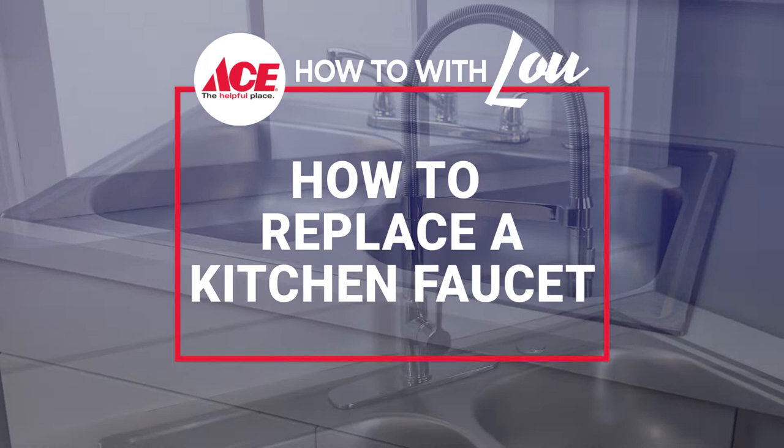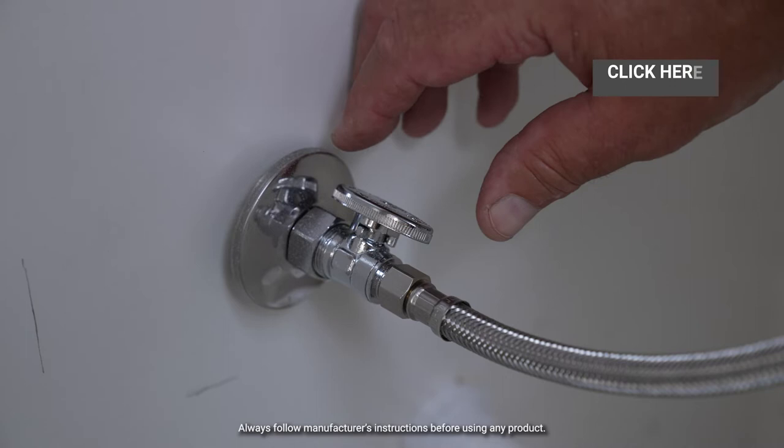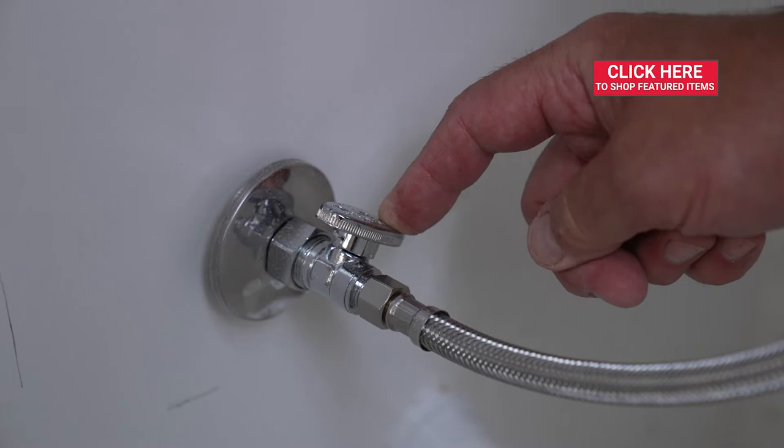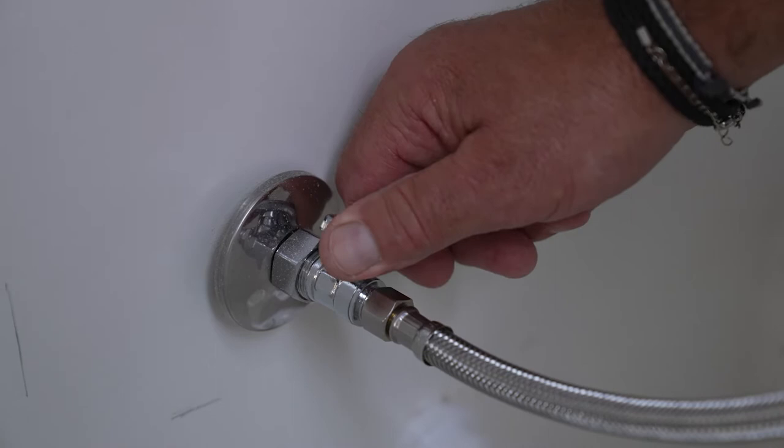The first step in replacing a kitchen faucet is to turn off the water to the faucet itself. So underneath the sink, you'll find a couple of valves like this. You want to turn it off. This is what's called a quarter turn valve. So you just have to turn it a quarter turn. Some may actually keep turning until you can't turn it any longer.